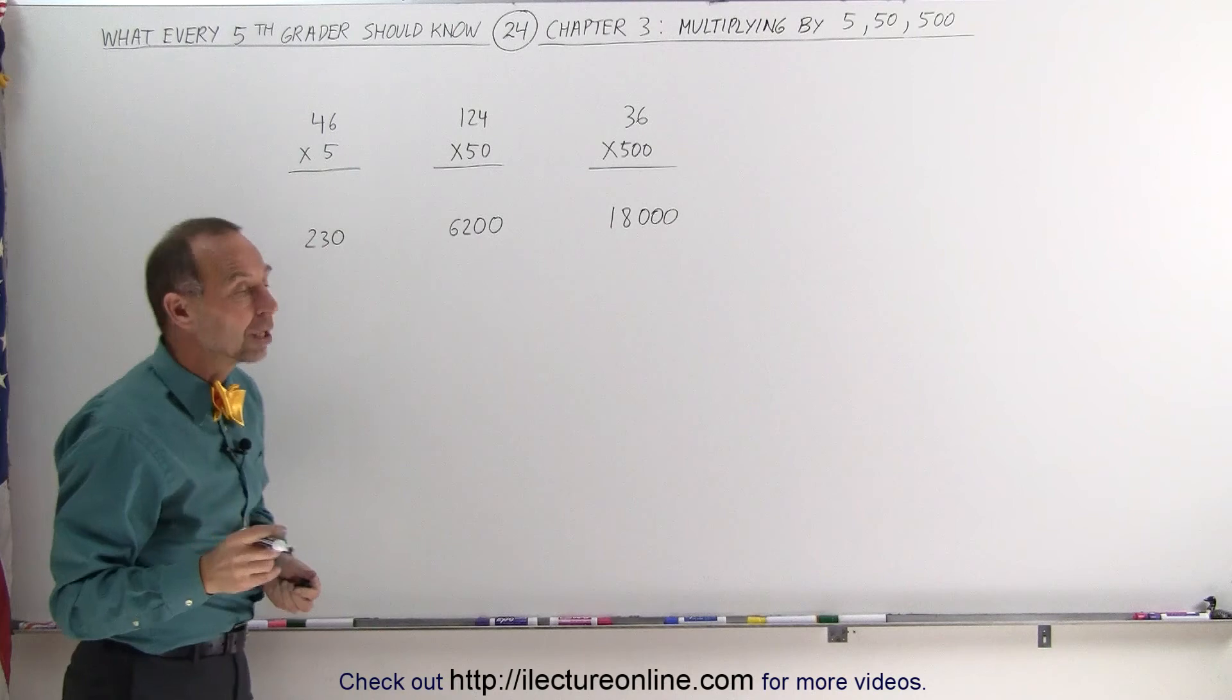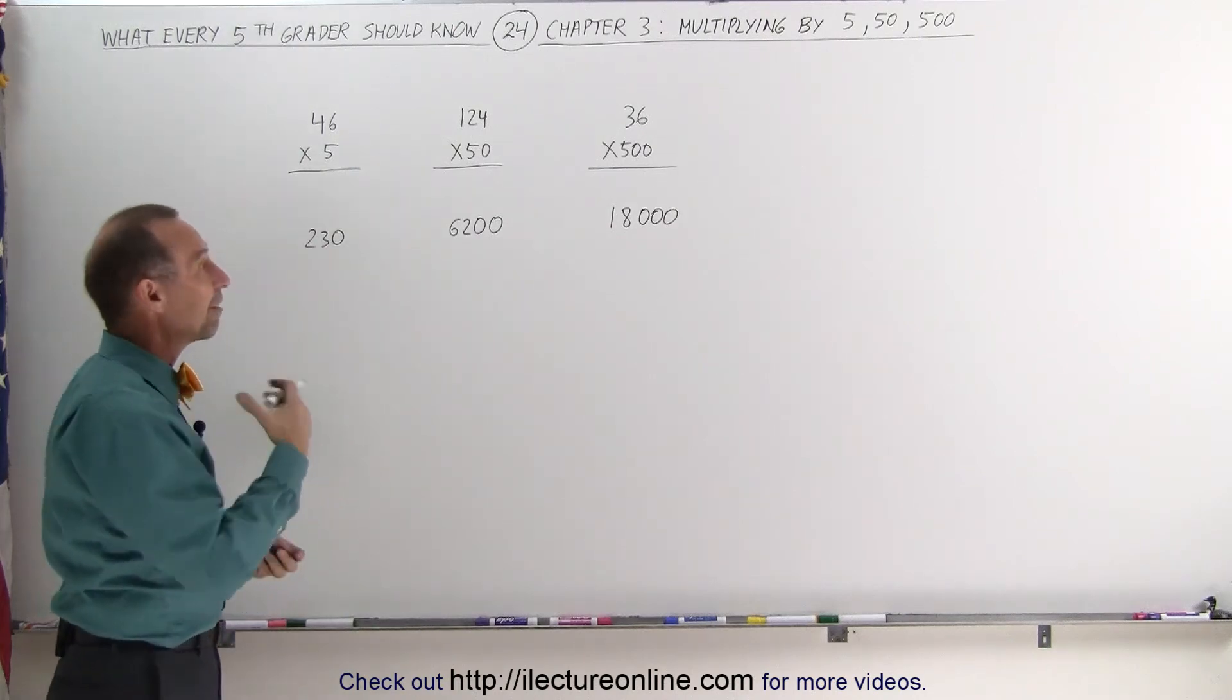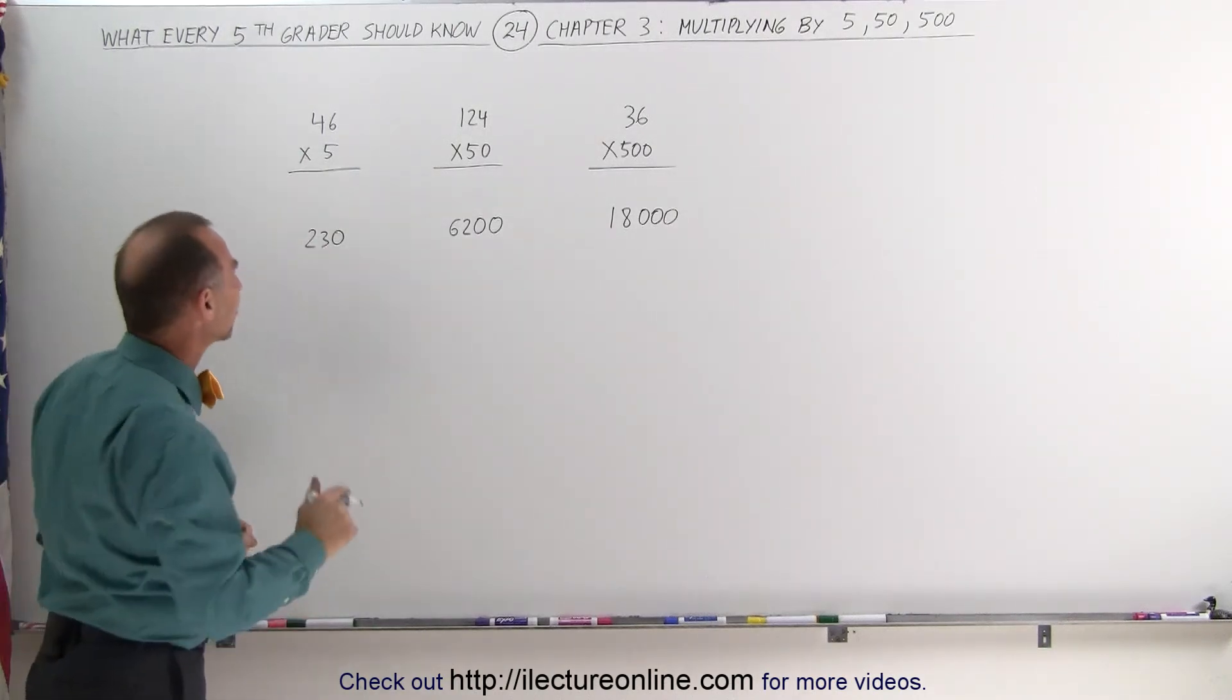So that's how you very quickly can multiply a number by 5, by 50, or by 500. Let's try some other examples.